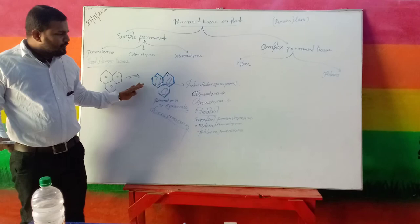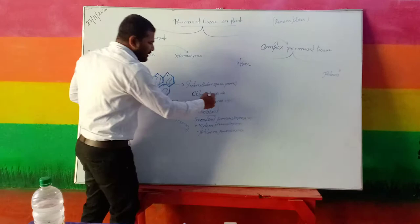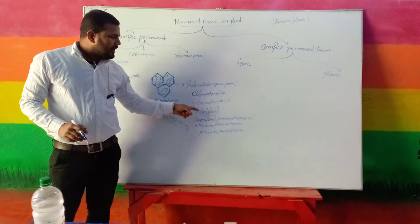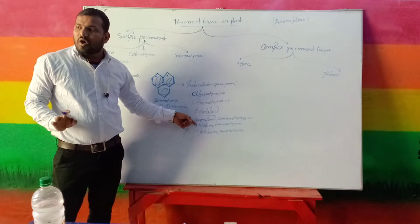Some parenchyma help in photosynthesis — that is the chlorenchyma. Some parenchyma store air, providing buoyancy capacity for floating on water. Some parenchyma store accessory materials. Some parenchyma store water. These are all the functions of parenchyma.